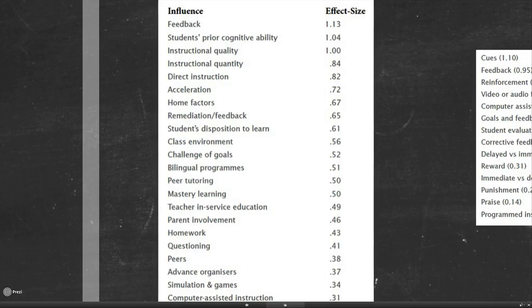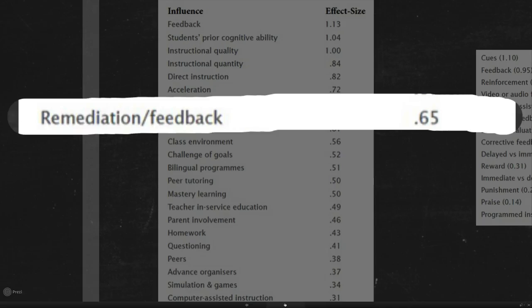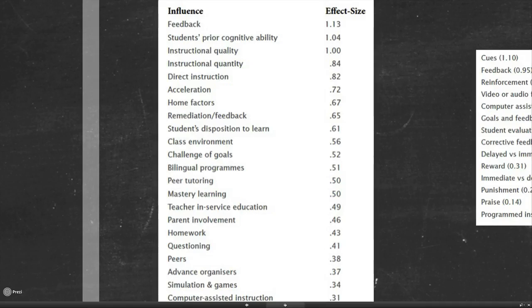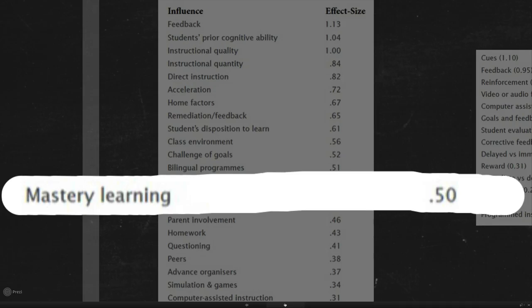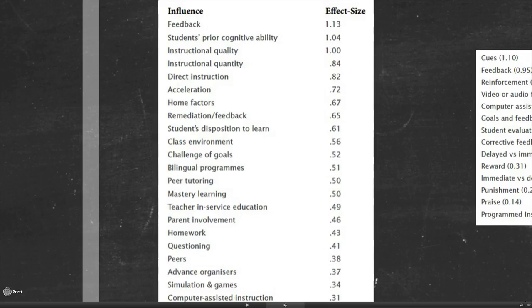Run further down the list - remediation feedback, where you try and correct things which students are doing wrong, very high on the list. Keep on going down - mastery learning, where you expect the students to understand at least 90 percent of the content material, and in order to do that you have to continually check what they don't know and correct it. What you begin to see is that feedback exists as one of the key mechanisms to actually improve education in the world.